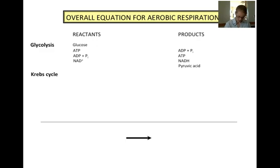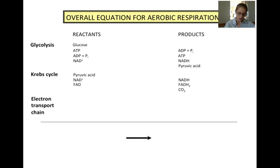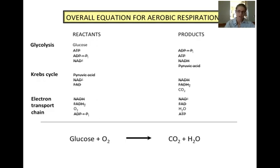The Krebs cycle is the next stage in cellular respiration; it begins with pyruvic acid. NAD+ gets reduced in the Krebs cycle to NADH, and FAD also gets reduced to FADH2. Carbon dioxide is released in the Krebs cycle as well. The electron transport chain is the third stage in cellular respiration. It begins with the oxidation of NADH into NAD+ and FADH2 into FAD. Oxygen serves as the final electron acceptor in the electron transport chain, producing water. Finally, ADP and inorganic phosphate produce ATP. By canceling all the compounds that appear as both reactants and products, we are left with a net reaction for cellular respiration: glucose and oxygen yield carbon dioxide and water.